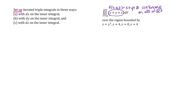Some problems will have the region drawn for you and some won't. In this example the region isn't drawn, so you can practice recognizing the surfaces. For problems without a picture, the surface equations should be fairly straightforward. The first surface, z equals y squared, is a cylinder — it's missing x, so it extends along the x-axis.